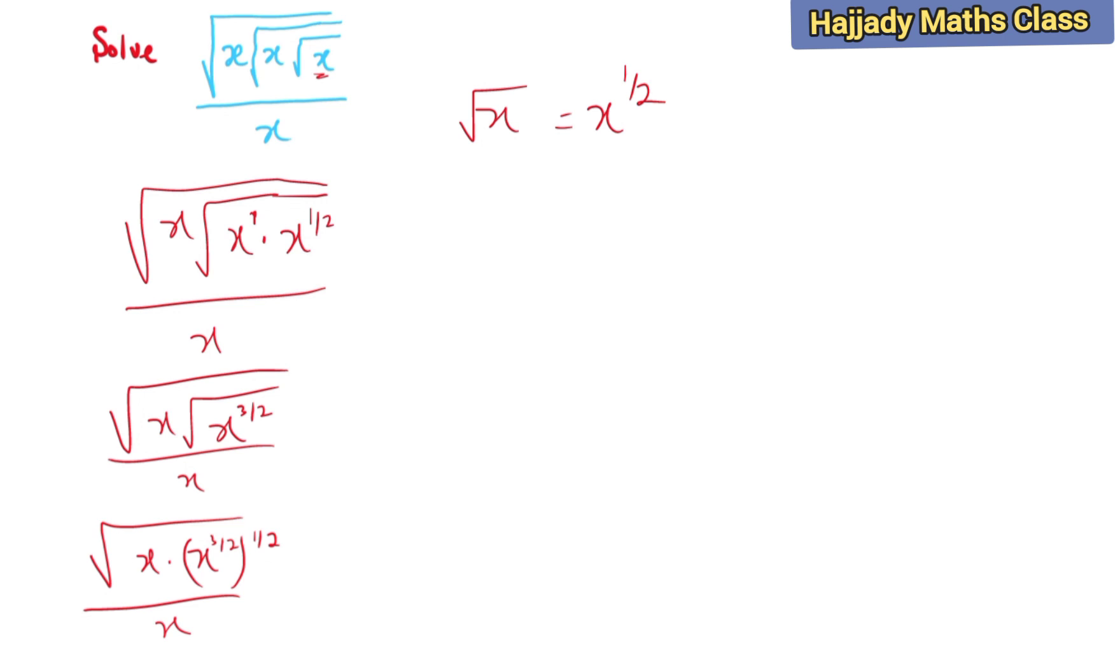So from here I'm going to have square root of x multiplied by x raised to power 3/4, all over x. So this is also the same thing as x raised to power 1 times x raised to power 3/4. So here I'm going to have x raised to power 1 plus 3/4, it's going to give me 7/4, all over x.